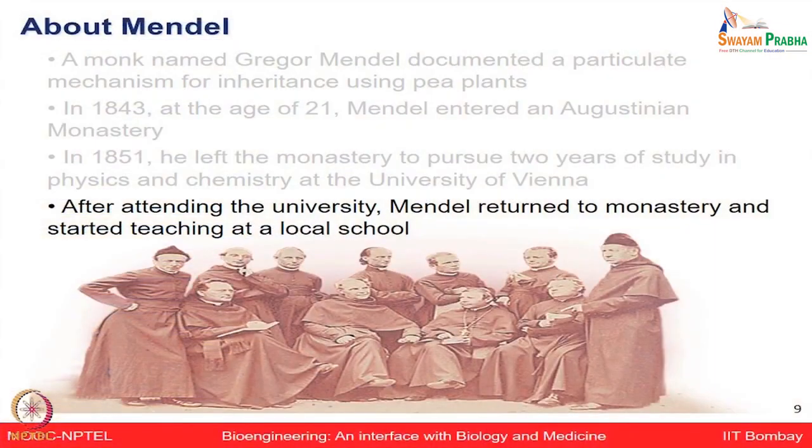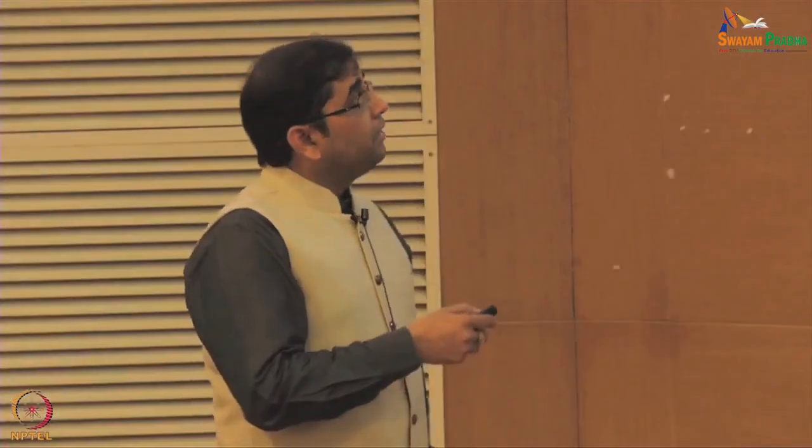After he returned from the university, he again joined the monastery and started teaching in a local school. He was growing garden peas and making very meticulous notes of what was happening from one generation to the next. Each time he did a cross, he would count the properties, how many seeds he grew, how many plants made out of them, and their characteristics. Because he was so meticulous, he came up with certain mathematical numbers and formulated the Mendelian laws of genetics.